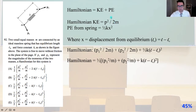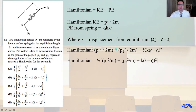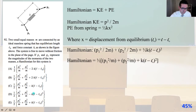The Hamiltonian equals kinetic energy plus potential energy. The kinetic energy is p squared over 2m, and the potential energy from the spring is one half kx squared, where x equals the displacement from equilibrium L₀, which equals L minus L₀. So our Hamiltonian equals p1 squared over 2m plus p2 squared over 2m plus one half k times the quantity L minus L₀ squared, and that is answer E.